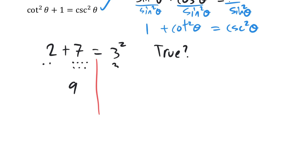Over here, 3 squared means 3 times 3 — that means you have three groups of 3, which gives you 9. So is it true? Yes, 2 plus 7 is the same as 3 squared. This idea of working on one side and then the other side, and showing that you get the same thing — we've done this before. We often do this when verifying a solution.